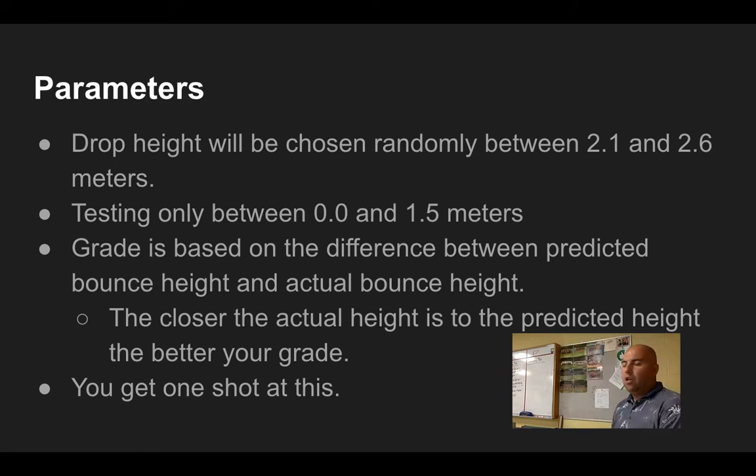Here's the thing. You can only test between ground level and 1.5 meters off the ground. So you're going to have to collect some data and use that to extrapolate or to try to figure out based on this data that I've collected between zero meters and 1.5 meters. This is how high it's going to bounce out here somewhere between 2.1 meters and 2.6 meters. Your grade is going to be based on the difference between the bounce height that you predict and the bounce height that actually happens. The closer your actual height is to the predicted height, the better your grade and you get one shot.